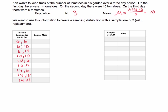Now I want to find the sample mean of each of those samples by adding up the observations and dividing by two. Six plus six divided by two is six. Six and ten is sixteen divided by two, which is eight. Six and fourteen is twenty divided by two, which is ten. Ten and ten: mean is ten. Ten and six: I get eight. Ten and fourteen: I get twelve. Fourteen and six: I get ten. Fourteen and ten: I get twelve. And fourteen and fourteen: I get fourteen.